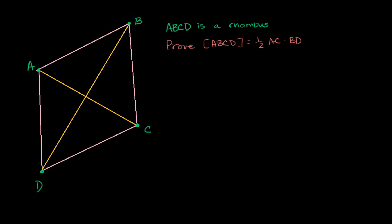Quadrilateral ABCD is a rhombus. We need to prove that the area of this rhombus is equal to one half times AC times BD. We're essentially proving that the area of a rhombus is one half times the product of the lengths of its diagonals. Let's see what we can do here.